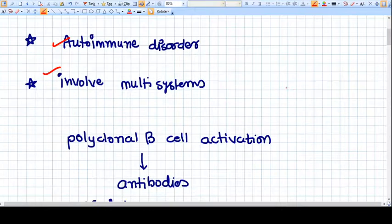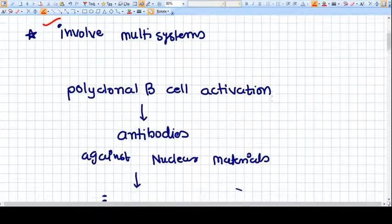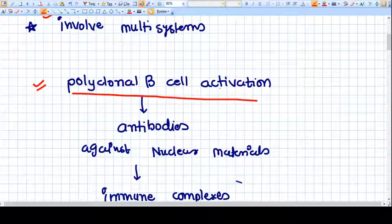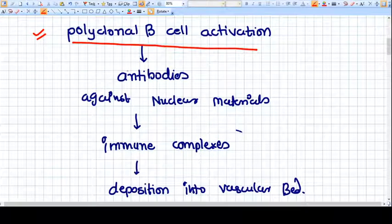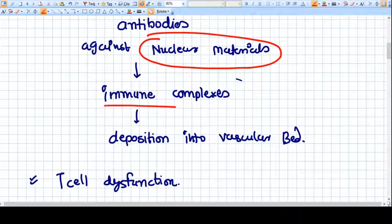What happens actually is there is polyclonal B cell activation dysfunction. This will lead to formation of antibodies against nuclear materials, which makes immune complexes.